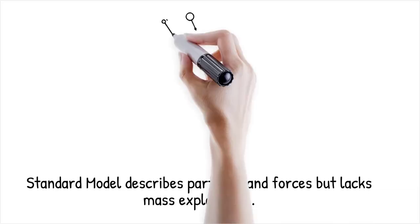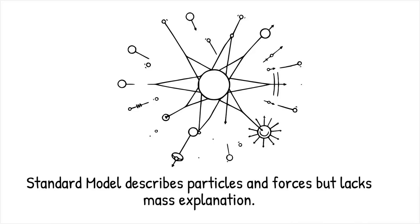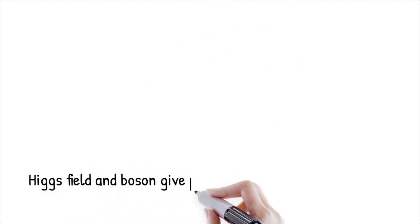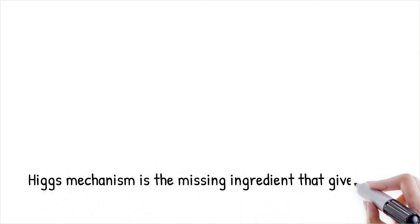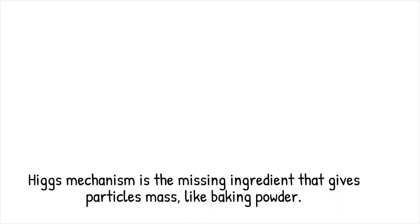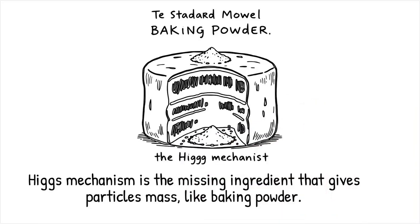Physicists use the standard model to describe all known fundamental particles — like quarks, electrons, and neutrinos — and the forces they interact with, except gravity. For decades, the standard model explained almost everything in particle experiments, but it had a glaring gap: it didn't fully explain why particles have mass. The equations hinted that without something extra, all particles would remain massless. The concept of the Higgs field and its associated boson filled this gap beautifully, explaining how particles slow down from light-speed to more well-behaved entities with mass.